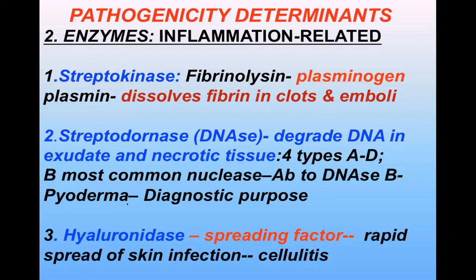Hyaluronidase degrades hyaluronic acid, the ground substance of subcutaneous tissue. It is also known as the spreading factor because it facilitates the rapid spread of Strep pyogenes in skin infections, leading to a condition known as cellulitis.